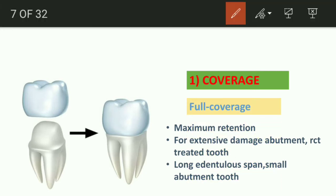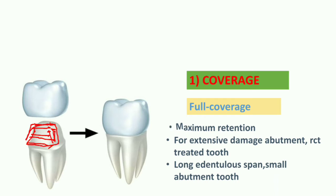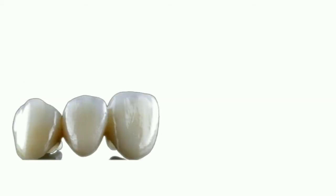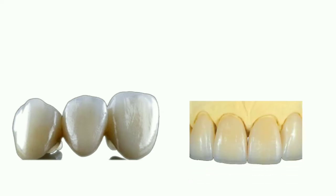First, according to coverage, we have full coverage retainers. If we cover all the surfaces of the abutment tooth on all sides, we get a full coverage retainer. These retainers give maximum retention and are mainly used for extensively damaged abutment teeth, RCT-treated teeth, or when we have a long edentulous span. This is how a full coverage complete coverage veneer retainer looks — it covers the abutment tooth from all surfaces.